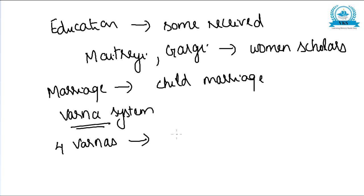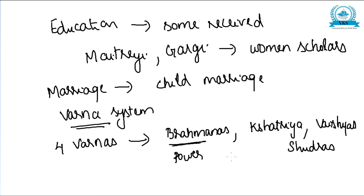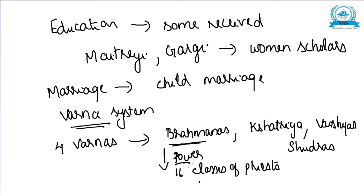The four Varnas were the Brahmanas, Kshatriyas, Vaishyas, and Shudras. The growing cult of sacrifices enormously added to the power of the Brahmanas. Initially they were only one of the sixteen classes of priests, but gradually they overshadowed the other priestly groups and emerged as the most important class.